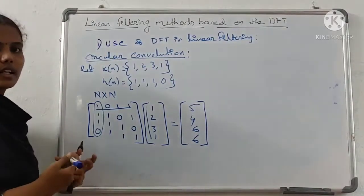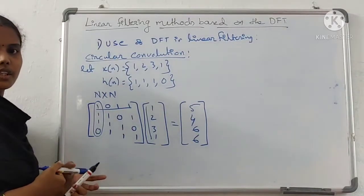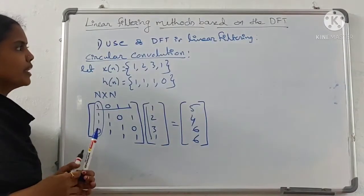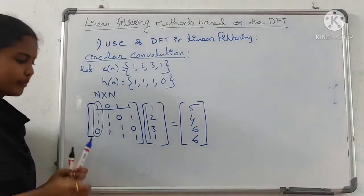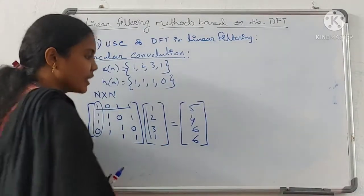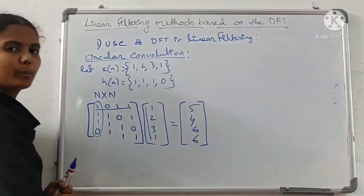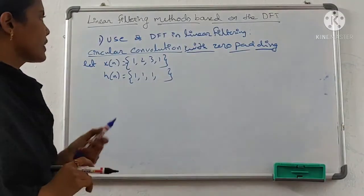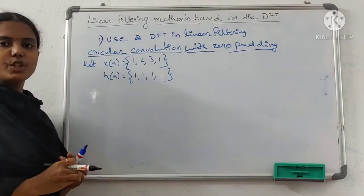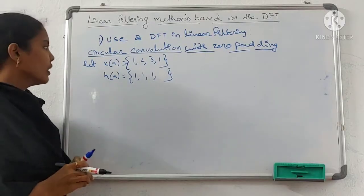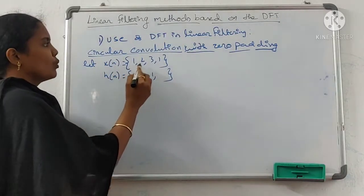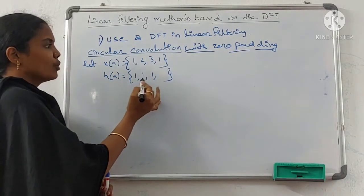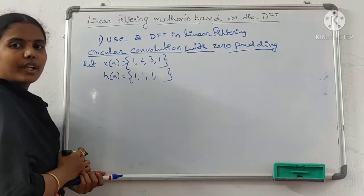Circular convolution can also be done with zero padding. Let x(n) = {1, 2, 3, 1} with L=4 samples, and H(n) = {1, 1, 1, 1} with M=3 (note: here H(n) has 4 ones, but M counts the filter length as 3 for zero-padding purposes).